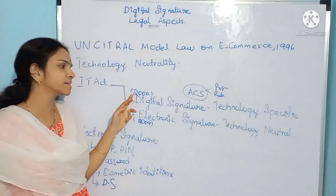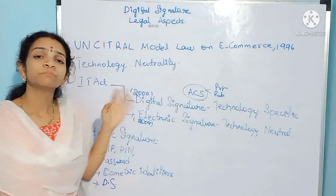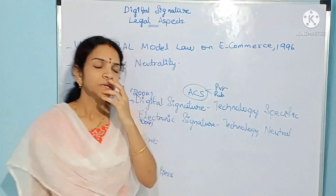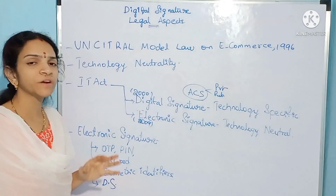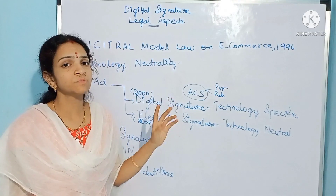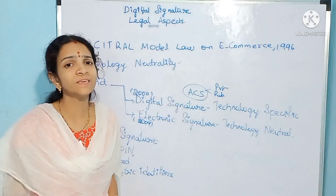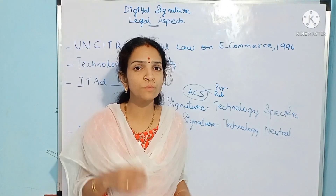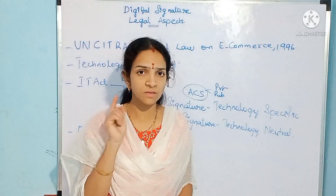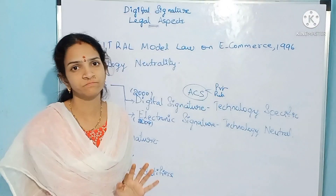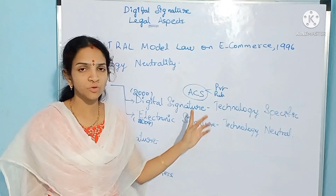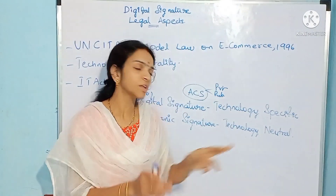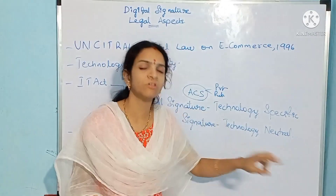However, when India made the IT Act in 2000, our legislators adopted digital signature which is technology specific. The IT Act 2000 specified digital signature as one made using a particular system called the asymmetric crypto system. If any company is going to make a digital signature, it has to follow the same asymmetric crypto system — only then will it be valid. That means it was made technology specific, not neutral.